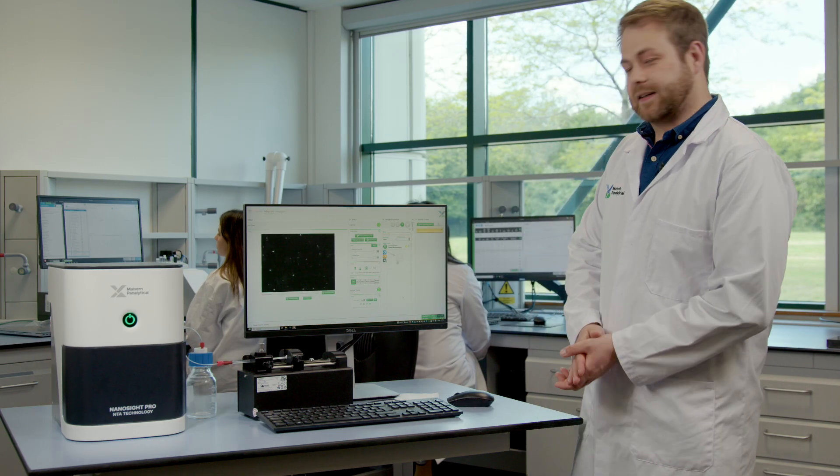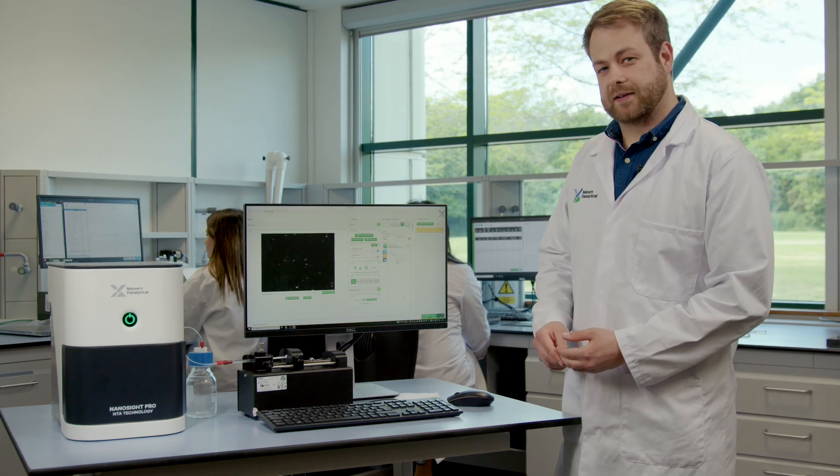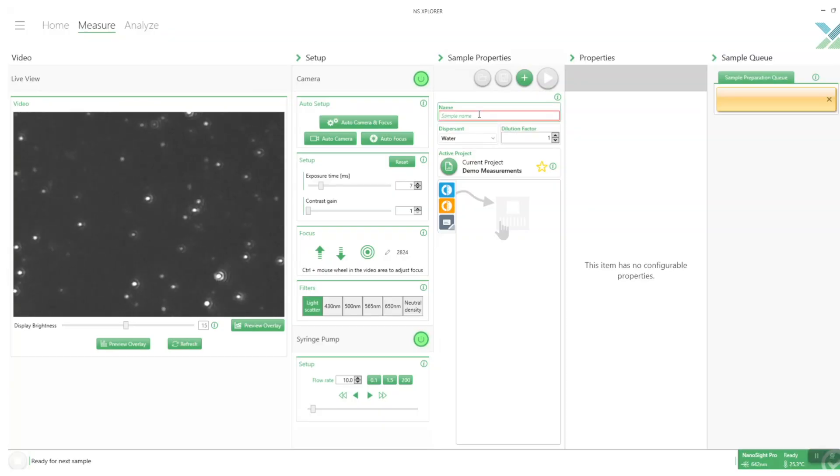Now that we've got the flow going we can set up the measurements. We start off by giving it a name. Our sample is exosomes so I'm just going to call it that and these exosomes have been labeled with a membrane dye which allows us to do fluorescence measurement.